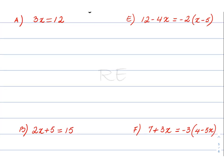For the first question, 3x is equal to 12 — 3 times a number is equal to 12. Using the inverse operation, we divide by 3, and that number is 4. So x is equal to 4.